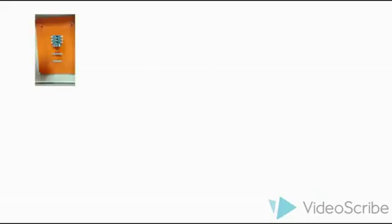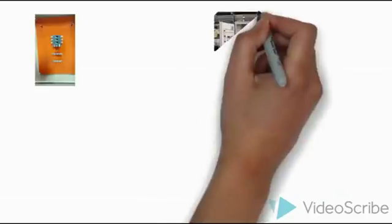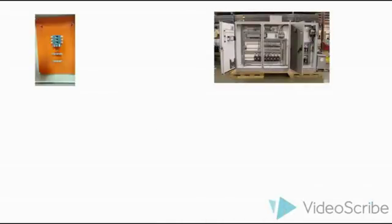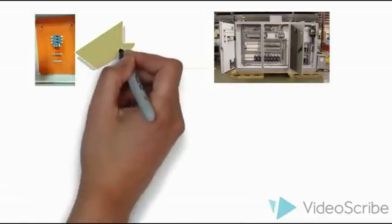This is one isolator for 400 ampere. This one is for the load side and this one is a main panel. The supply came from main panel to the load side.